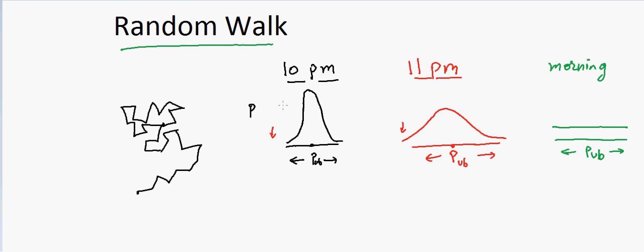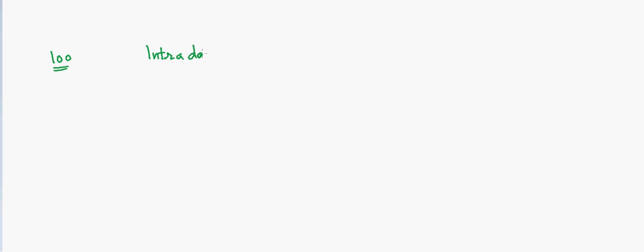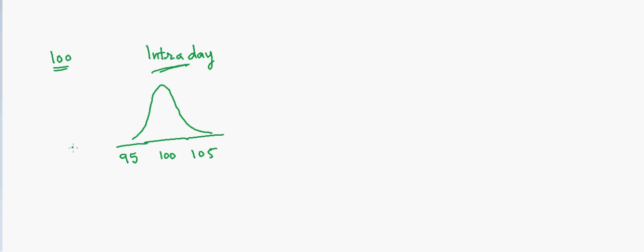Now let's apply random walk to the stock market. Suppose a stock is at $100. If I'm looking at intraday, the possible range might be $95 to $105. The probability distribution of where the stock price will be looks like a narrow distribution centered around $100, with the most likely outcome being near that starting price.